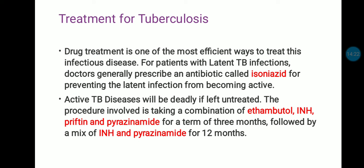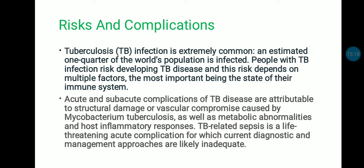The treatment of tuberculosis: drug treatment is one of the most efficient ways to treat this infectious disease. For patients with latent TB infection, doctors generally prescribe an antibiotic called isoniazid to prevent the latent infection from becoming active. Active TB cases will be deadly if left untreated. The procedure involves taking a combination of medicines like ethambutol, INH, rifampicin, and pyrazinamide for 3 months, followed by a mixture of INH and pyrazinamide for 12 months. Treatment is available but the number of patients is increasing.